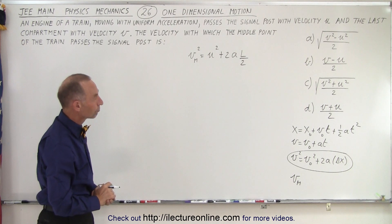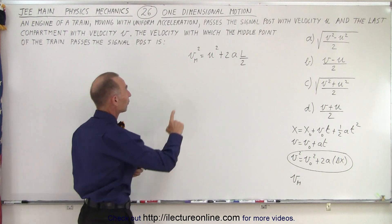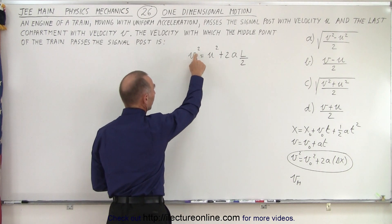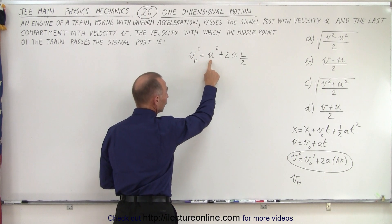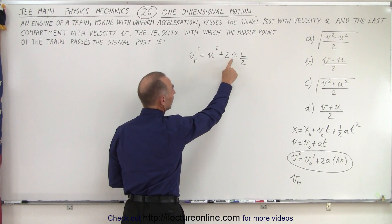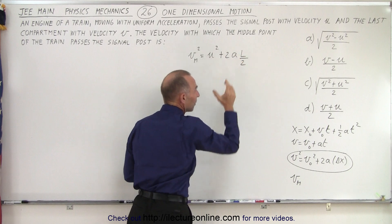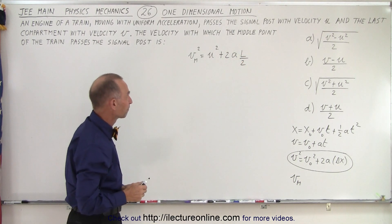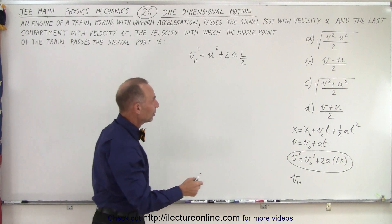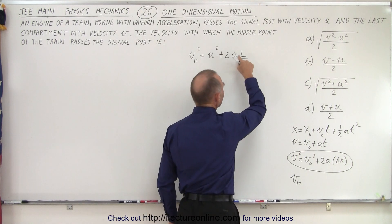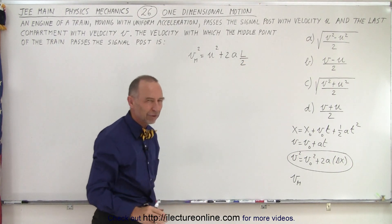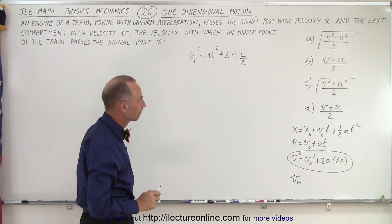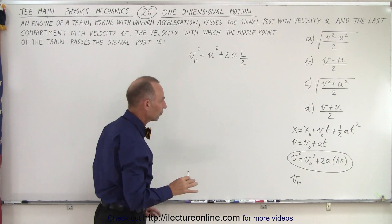All right, that should work. So the velocity when the middle of the train passes squared equals the velocity in the beginning when the engine passes squared plus two times acceleration times the amount of length of the train would be half the train has gone by. But notice that none of the answers include a and l. So somehow we have to eliminate that.